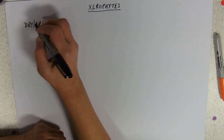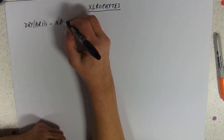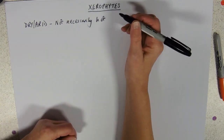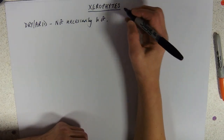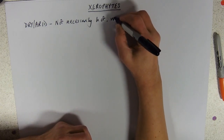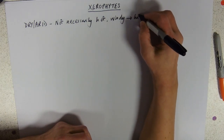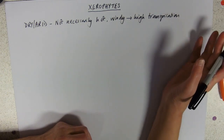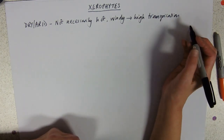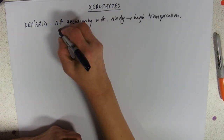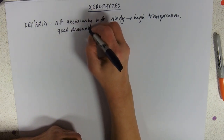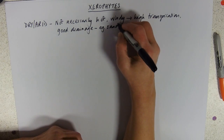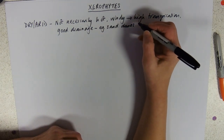Now I need to warn you - this does not necessarily mean hot, so these are not necessarily hot environments. We have plenty of Xerophytes living in the UK. They could be places that are windy, so there are very high transpiration rates for those plants with reasonably low water availability. It could be a place with good drainage - the example in your booklet is marram grass on sand dunes, very good drainage, and that's why they're dry. They're not hot at all usually.